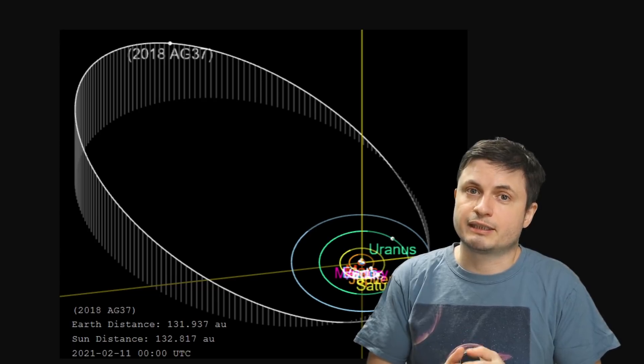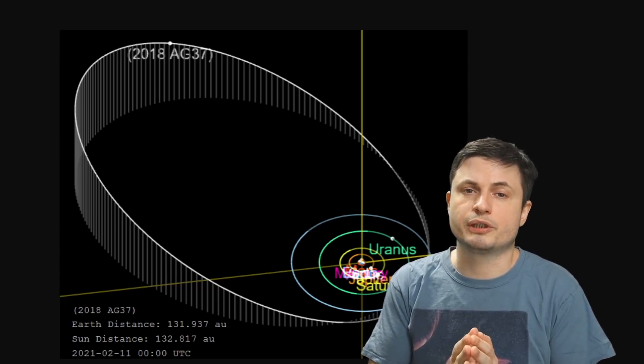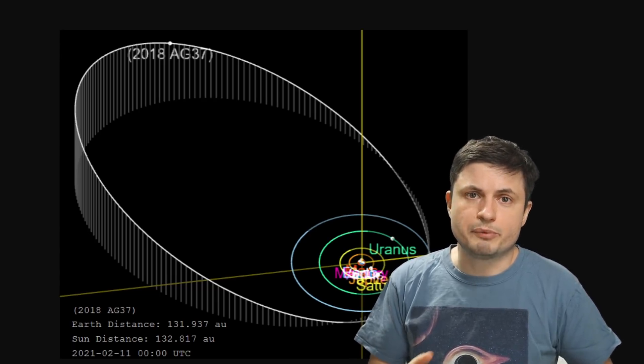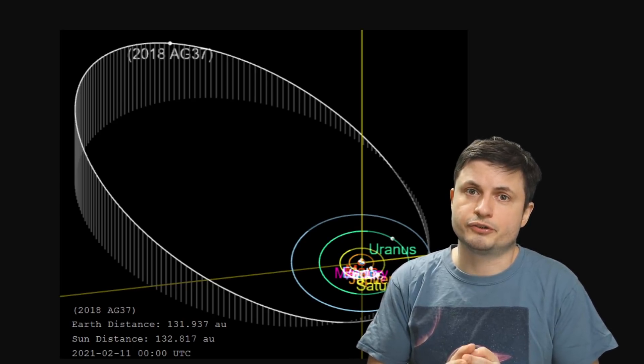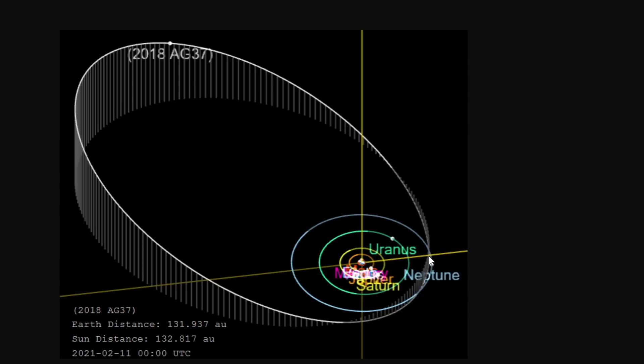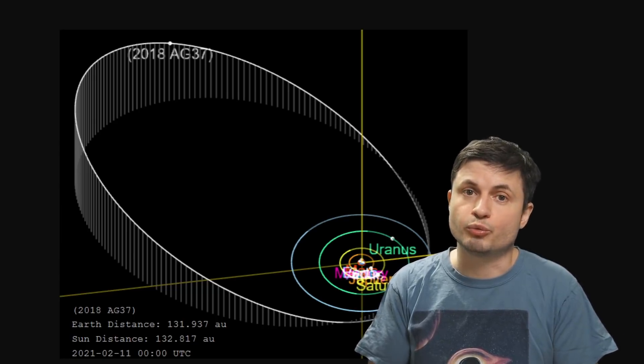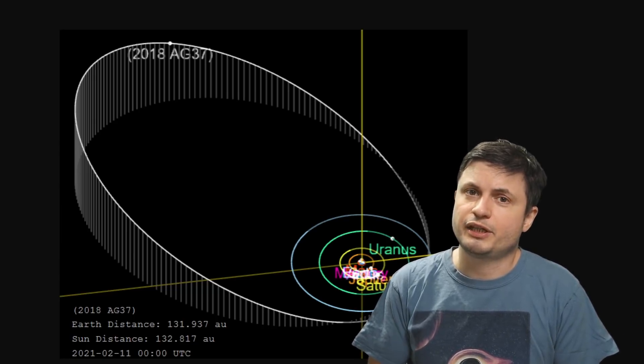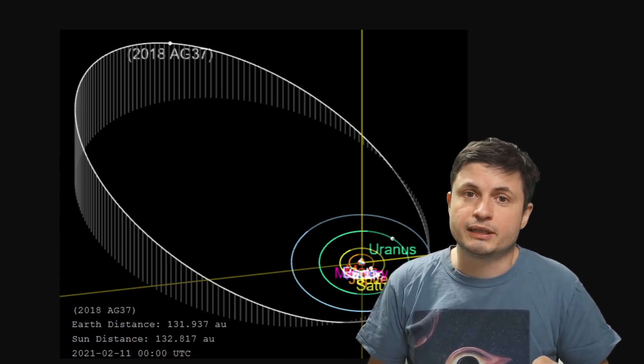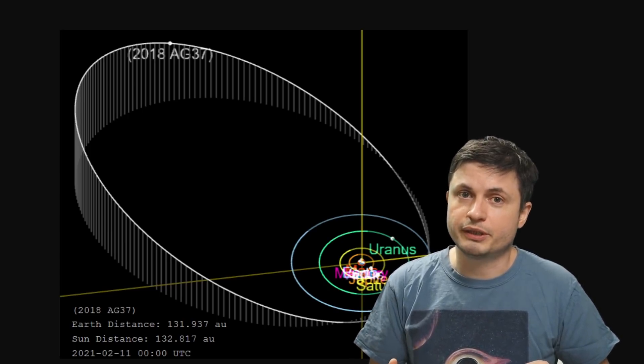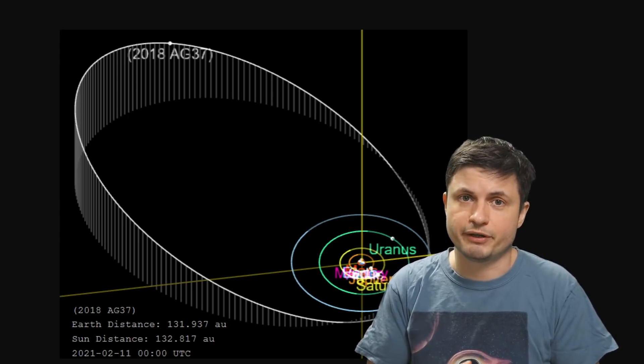But interestingly unlike some of the other so-called transneptunian objects this one has a very peculiar orbit. Its lower point, its so-called periapsis, ends up crossing Neptune's orbit pretty much every 1000 years or so. In other words it comes to within about 29 astronomical units away from the sun. And that's something we kind of have never really seen before but would also explain why it has such an eccentric orbit and why it's so far away from everything.